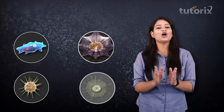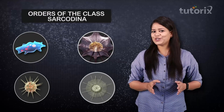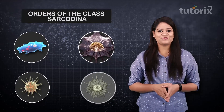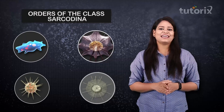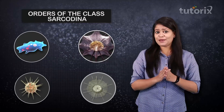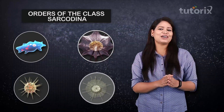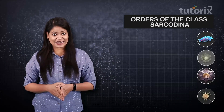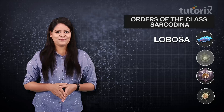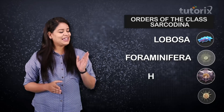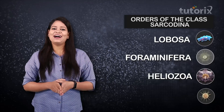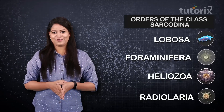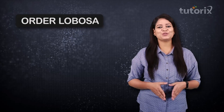Now let us talk about the different orders of class Sarcodina. On the basis of different types of pseudopodia, class Sarcodina is further classified into four orders: Lobosa, Foraminifera, Heliozoa, and Radiolaria. We will study all these orders one by one, beginning with order Lobosa.